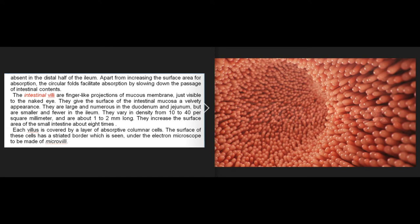Apart from increasing the surface area for absorption, the circular folds facilitate absorption by slowing down the passage of intestinal contents. The intestinal villi are finger-like projections of mucous membrane just visible to the naked eye, giving the mucosal surface a velvety appearance. They are large and numerous in the duodenum and jejunum but smaller and fewer in the ileum. They vary in density from 10 to 40 per square millimeter and are about 1 to 2 millimeters long, increasing the surface area about eight times.